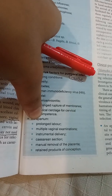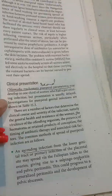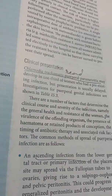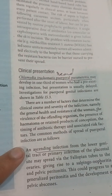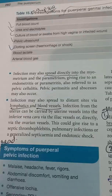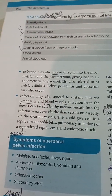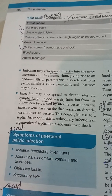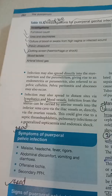Clinical presentation of puerperal pelvic infection: blood pressure and heart rate rise, foul-smelling vaginal discharge. Infection spreads from the lower genital tract directly, and from the myometrium and perimetrium causing perimetritis, endometritis, pelvic peritonitis, and abscesses. Infection may also spread through lymphatics and blood vessels. Investigations include full blood count, urea and electrolytes, culture of blood and high vaginal swabs, infected wound swabs, pelvic ultrasound, clotting factors, blood lactate, and arterial blood gas.